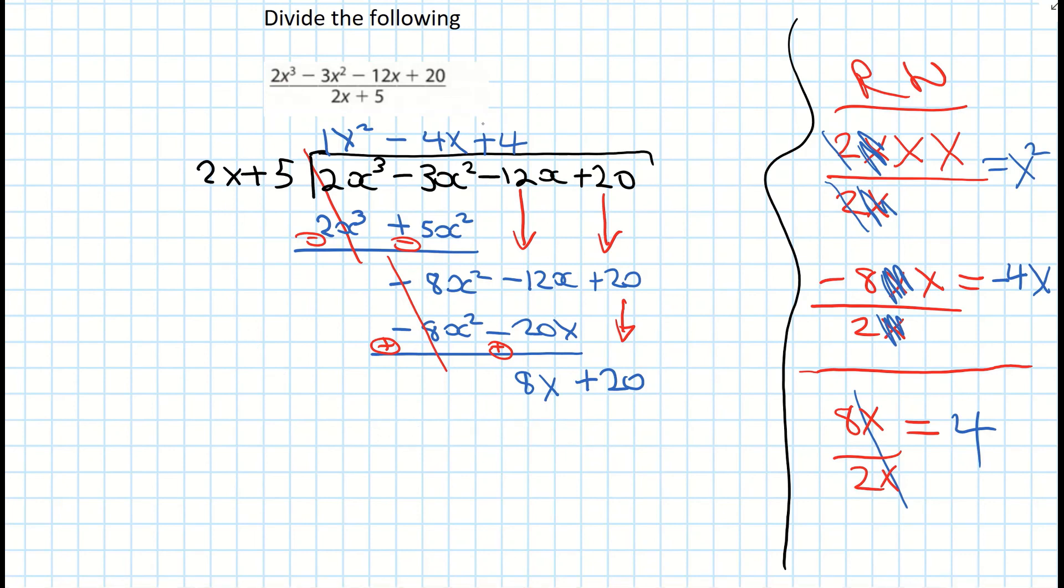Next step now is to multiply down that positive 4. So we multiply the 4 by the 2x. And that's giving us an 8x. And we multiply the positive 4 by the 5. And that's giving us a positive 20.